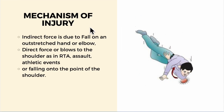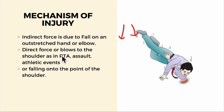Moving on to the mechanism of injury: indirect force is due to a fall on an outstretched hand or elbow. Direct force or blows to the shoulder, as in a road traffic accident, assault, or athletic events — as you can see in this diagram — or falling onto the point of the shoulder.